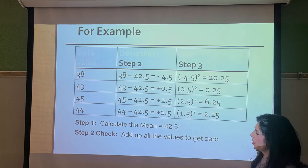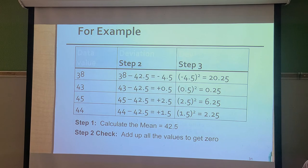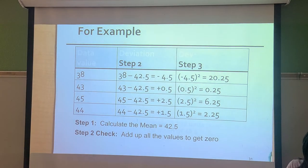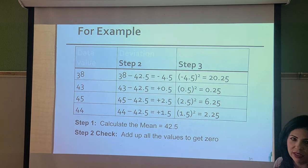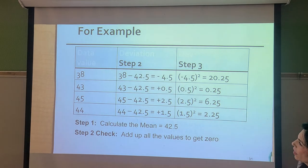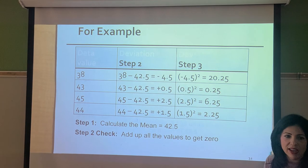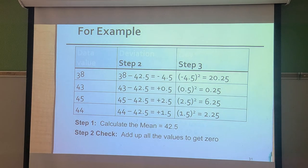A step-two check: if you add all the deviation values, they should equal zero. So negative 4.5 plus 0.5 plus 2.5 plus 1.5 equals zero, which confirms your deviation calculations are correct. Then move on to step three: square each of those values, regardless of whether they're negative. Negative 4.5 squared is 20.25; 0.5 squared is 0.25; and so on.